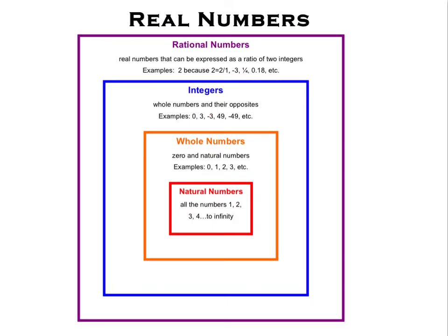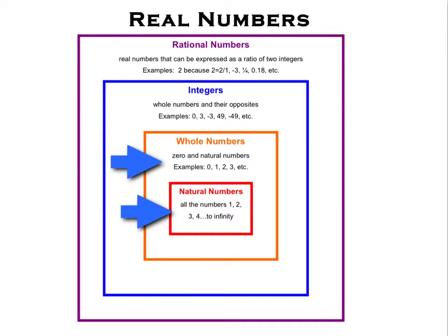Here again are our real numbers. We start with our natural numbers — those are our counting numbers. Then we go to our whole numbers, which add 0. Next we have our integers, which take those whole numbers and add their opposites, giving us our concept of negative numbers. The last group is our rational numbers, which is fractions — any number that can be expressed as a ratio between two numbers, basically a numerator divided by a denominator.